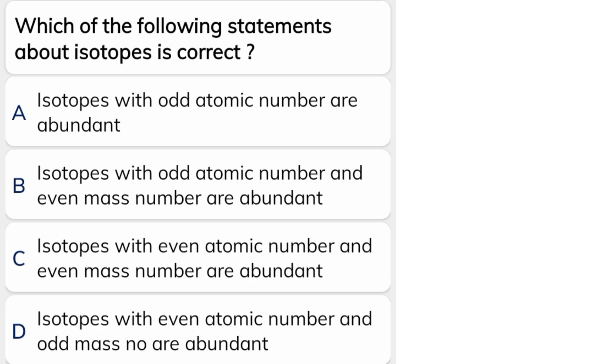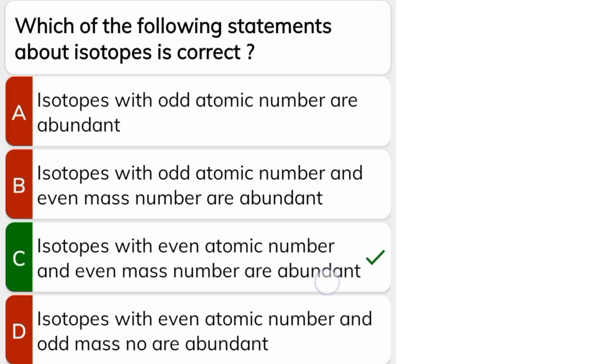Which of the following statements about isotopes is correct? Correct answer is C. Isotopes with even atomic number and even mass number are abundant.